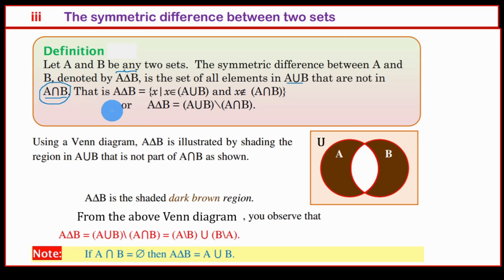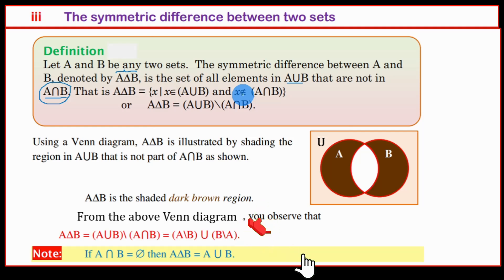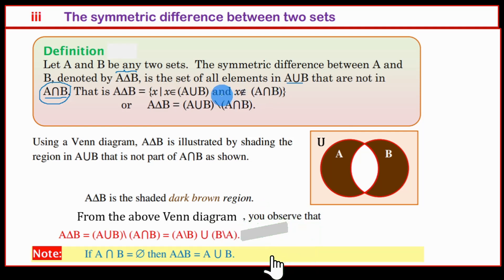A delta B is equal to the set containing x such that x is an element of A union B and x is not an element of A intersection B.